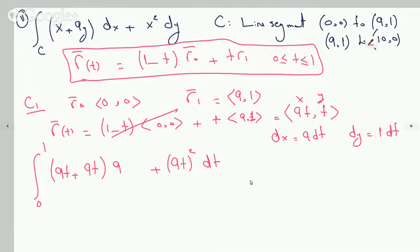This is evaluating a line integral on a line segment that has two pieces to it. The first one, c1, goes from (0,0) to (9,1). The other one goes from (9,1) to (10,0).